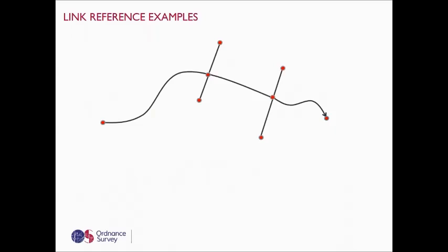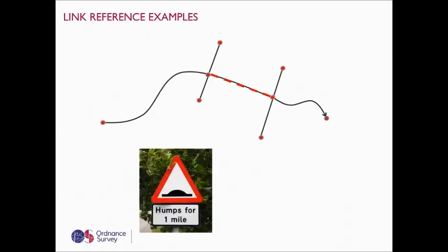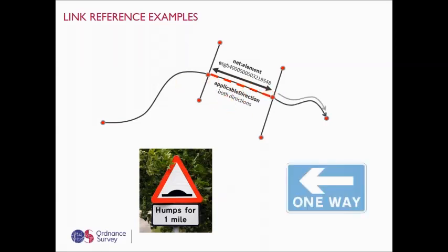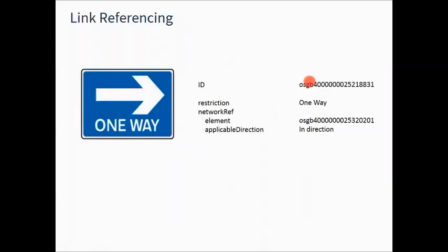In the traffic calming example, each black line between red dots is a road link, applicable in both directions. For a one-way street, the restriction is applicable only in the digitizing direction — indicated by an arrow — with applicable direction set to in-direction. The following slide shows the same one-way street data in a more readable format.